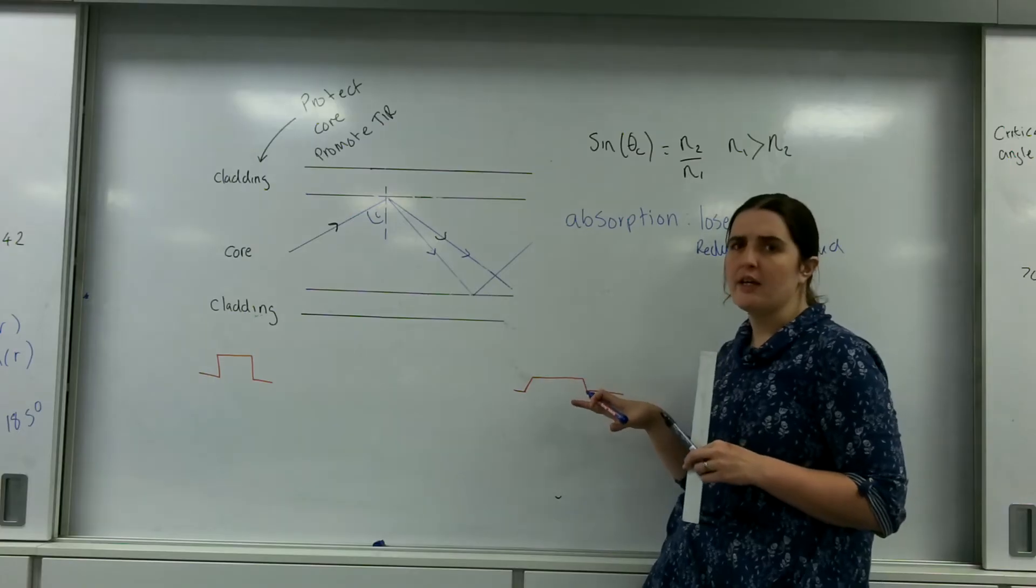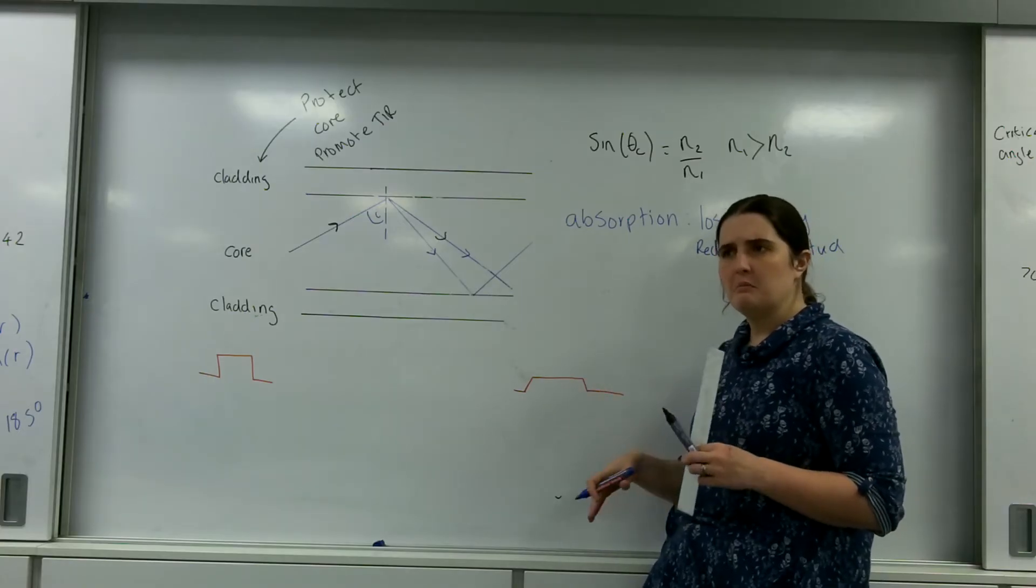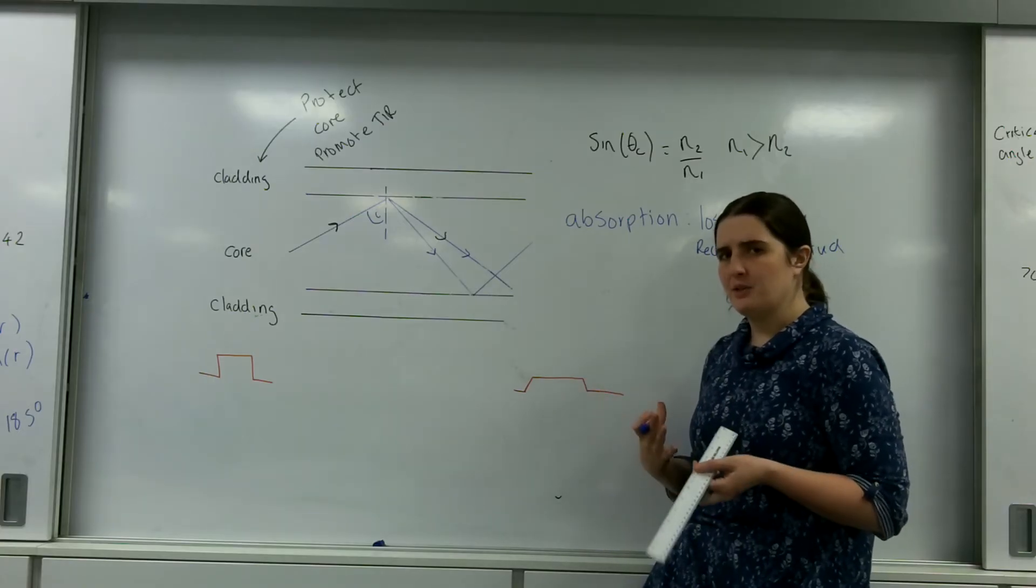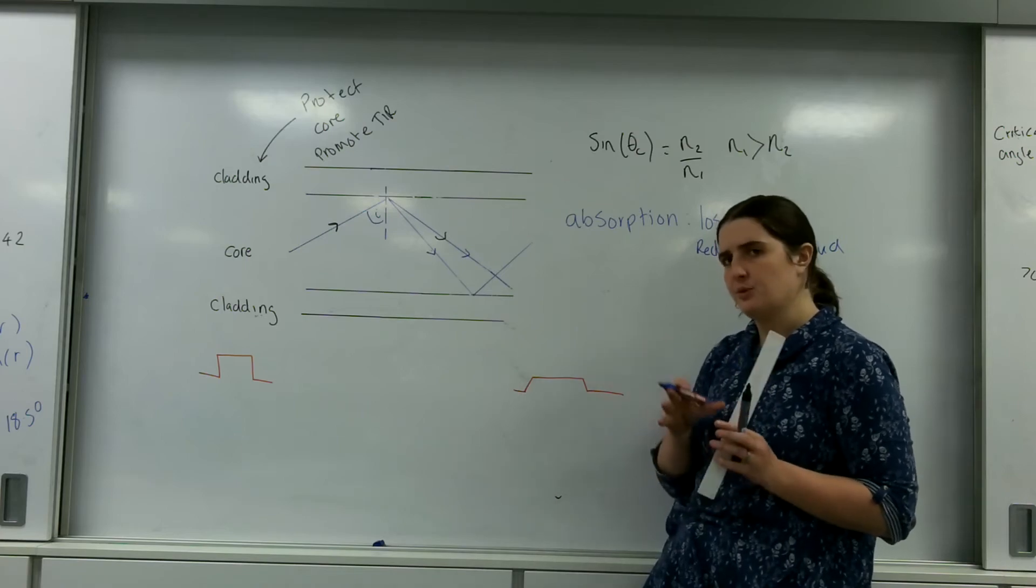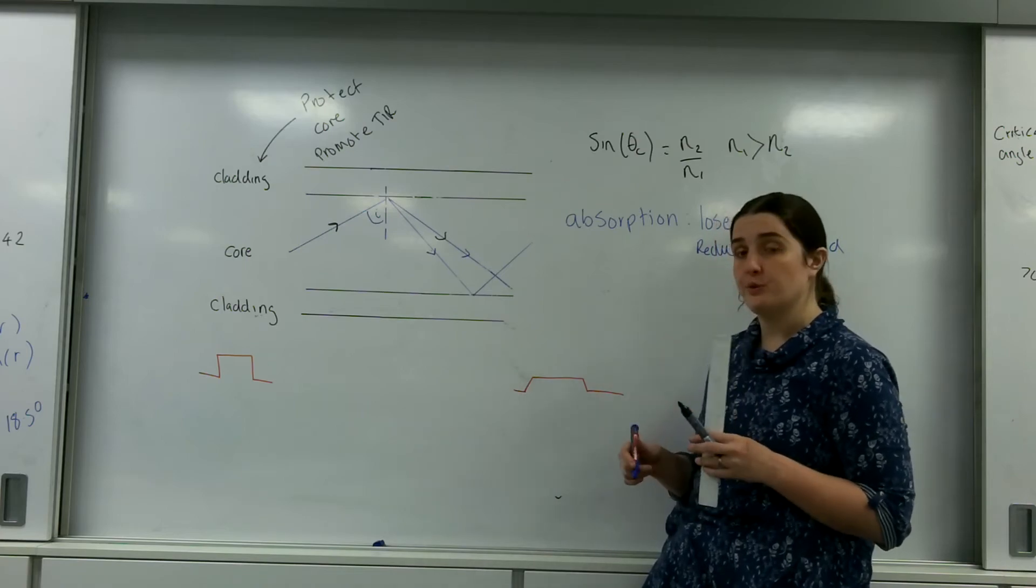They're all going to arrive at different times, which means that you're not going to get your signal in the same on, off, very clear. You're going to get this sort of graduated. And this is called modal dispersion.